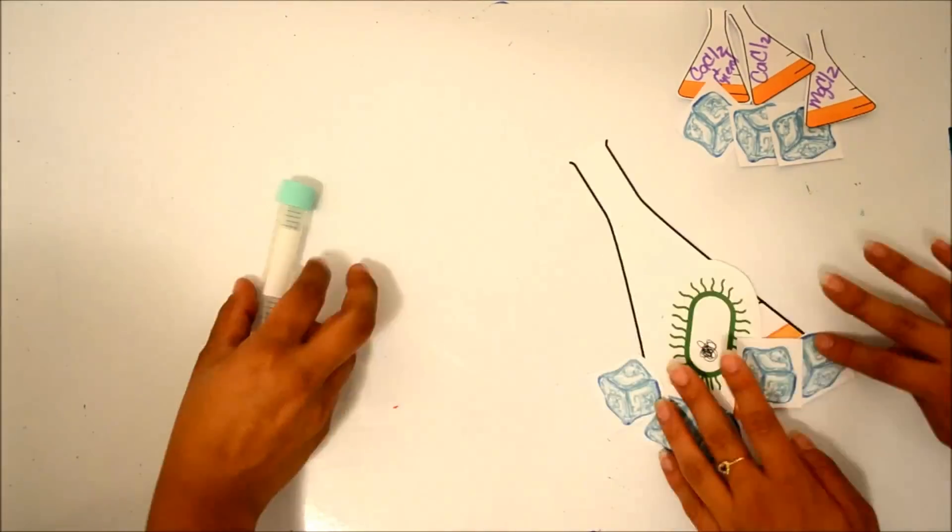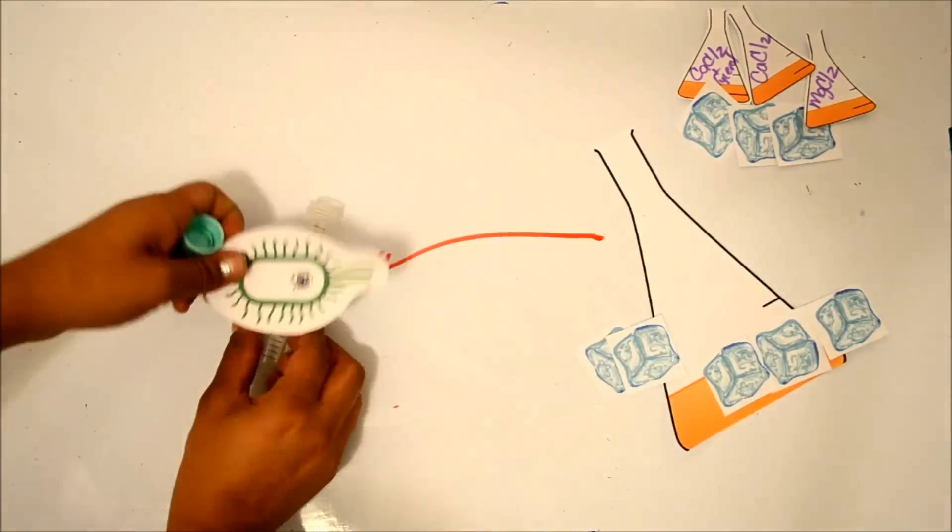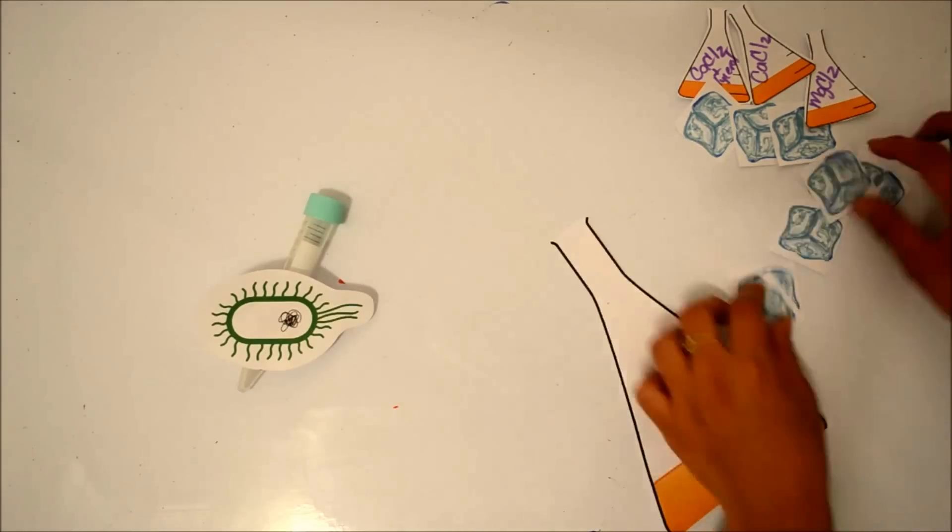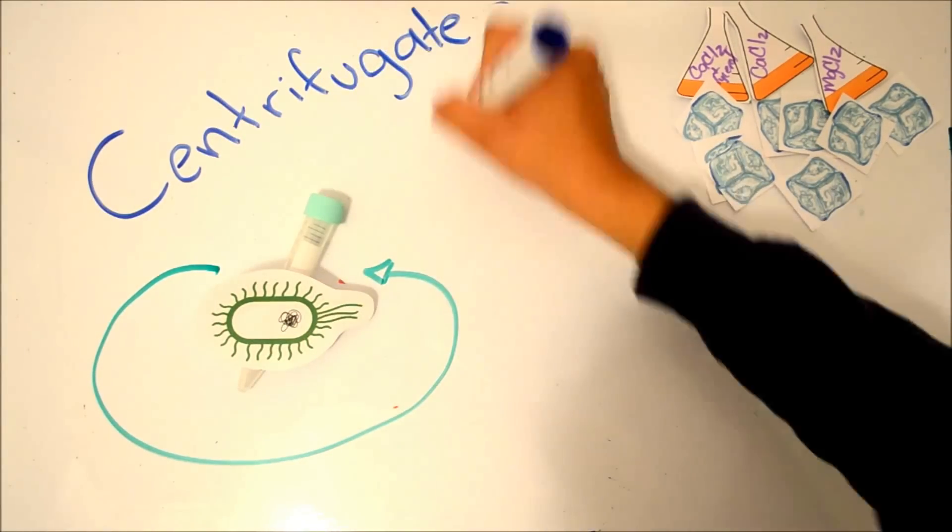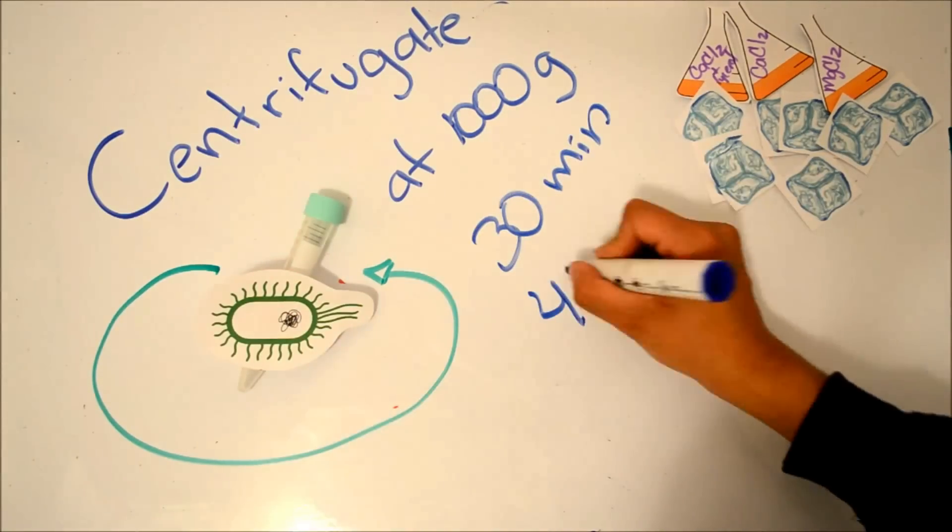Put the medium in a falcon tube. Centrifuge at 1000 g at 4 degrees for 30 minutes. Decant the supernatant.